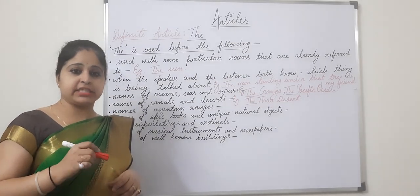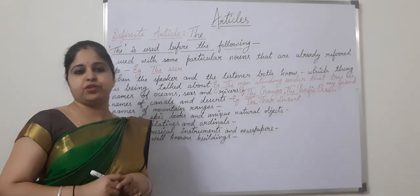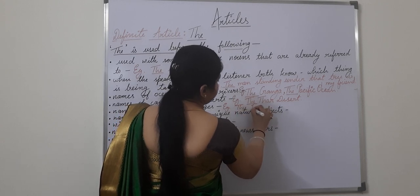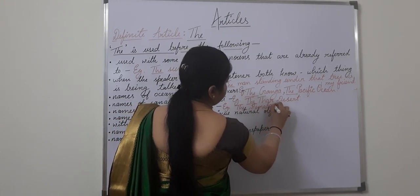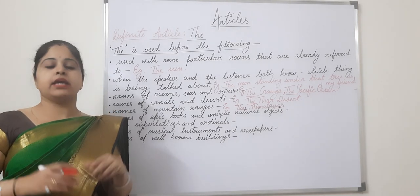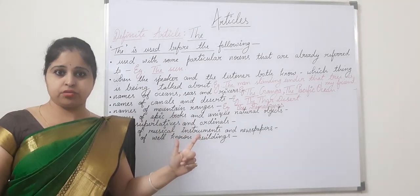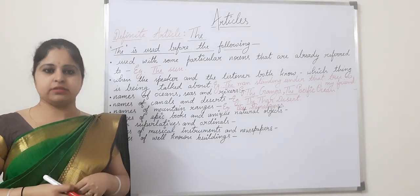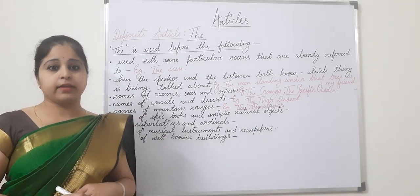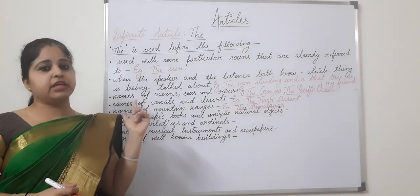We also use the definite article with the names of mountain ranges, because they are also very special. For example, 'the Himalayas'. There are two reasons: first, the Himalayas is not just one mountain — it's a mountain range carrying a number of mountains. Second, it is very particularly known all over the world.